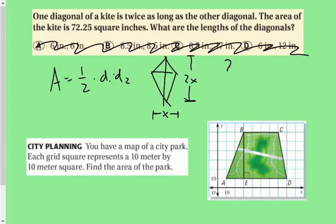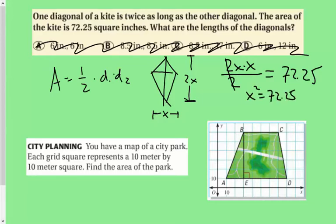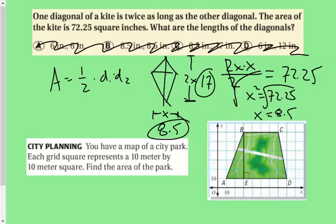Okay, so we have 2x times x divided by 2, that's convenient, equals 72.25. Okay, so those reduce and we have x squared equals 72.25, and then I would square root both sides. And again, I'm going to ignore the negative answer because we're dealing with side lengths here. Okay, so we get x equals 8.5. So this one right here is 8.5, and this one here would be 17. Those will be my lengths of my diagonals there.